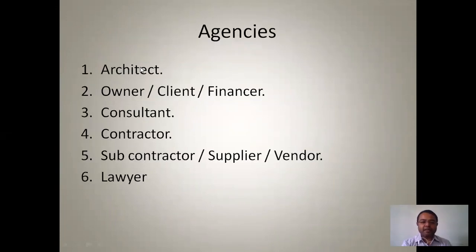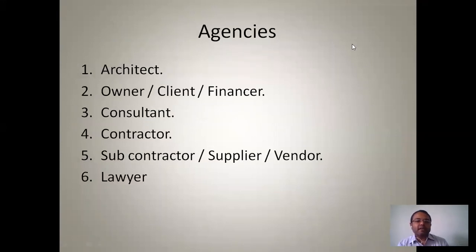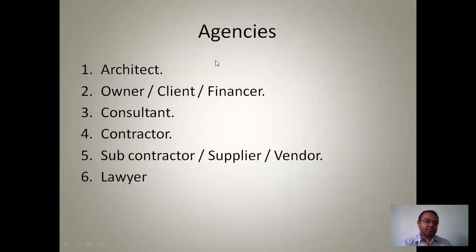We'll continue with the next part, that is the agencies. To complete any project, there are different agencies, and for each agency we have to allocate different tasks. For example, considering the construction of an apartment, we require an architect, an owner or financer, a consultant, a contractor, subcontractor, supplier, vendor, and lawyer. These are the different agencies required while constructing any project.